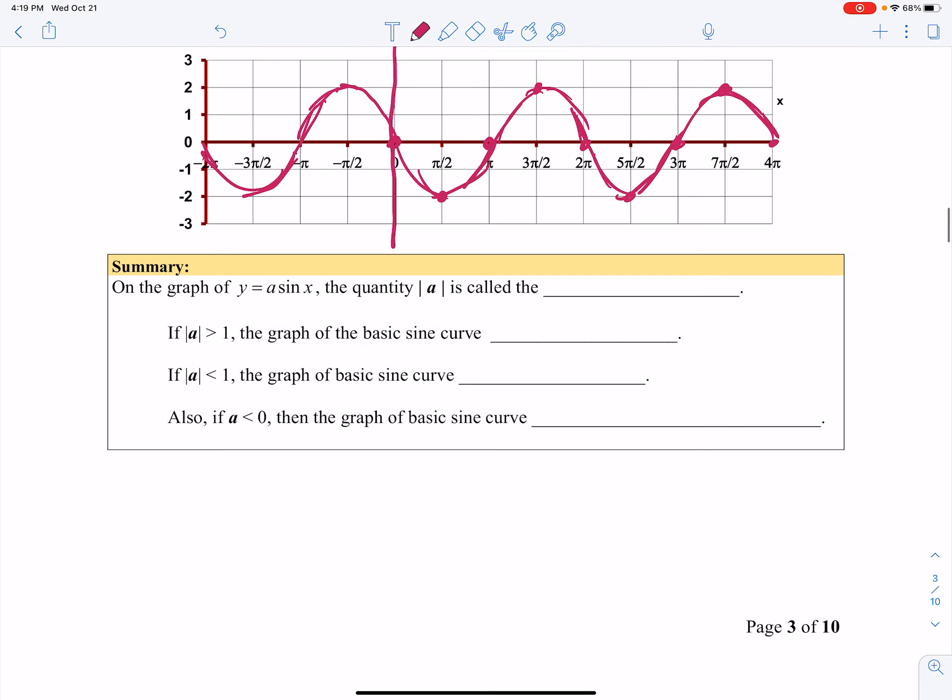So let's just summarize. If I'm looking at the graph of y equals a sine of x, that quantity, absolute value of a is called the amplitude. So amplitude itself has to be a positive number. Amplitude tells you how far is it away from the center, which is 0, to either the highest point or the lowest point.